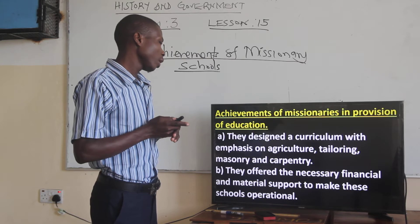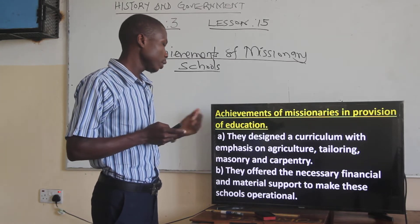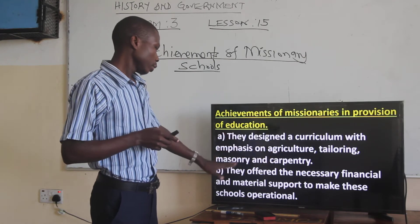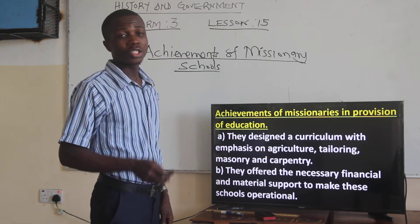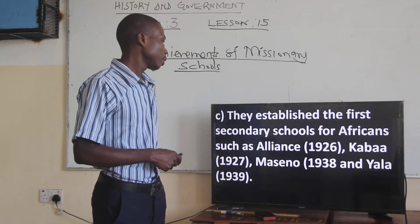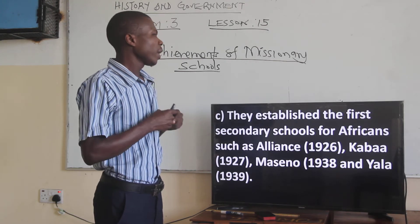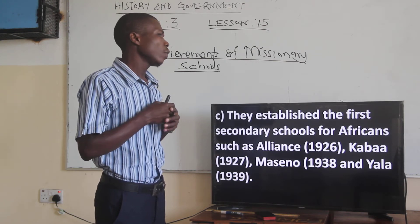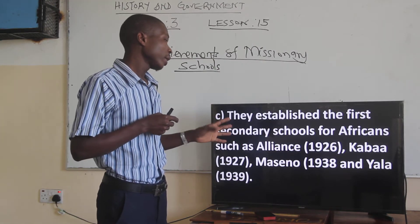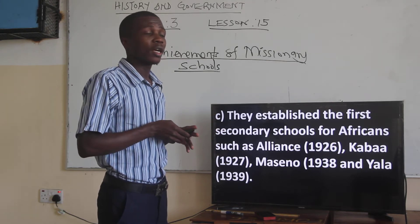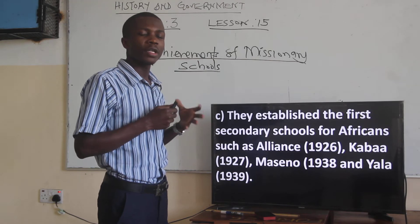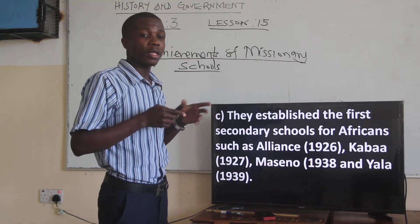Another achievement is that they offered necessary financial and material support to make the schools operate. They also established the first secondary schools for Africans, such as Alliance High School in 1926, Kabaa, Maseno, and Yala — St. Mary's. These were schools established for Africans by the missionaries, and that was a significant achievement.